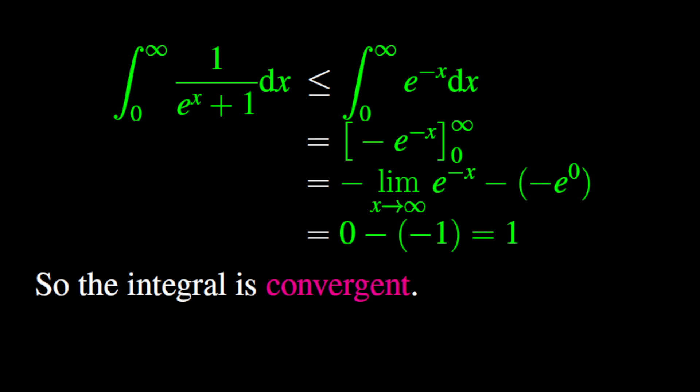The integral of exponential of negative x dx is equal to 1, because the antiderivative of exponential of negative x is minus exponential of negative x. Moreover, the limit as x goes to infinity of exponential of negative x is 0, and exponential of 0 is 1. Thus, the integral from 0 to infinity of the fraction 1 over exponential of x plus 1 dx is less than or equal to 1. Therefore, the integral is convergent.